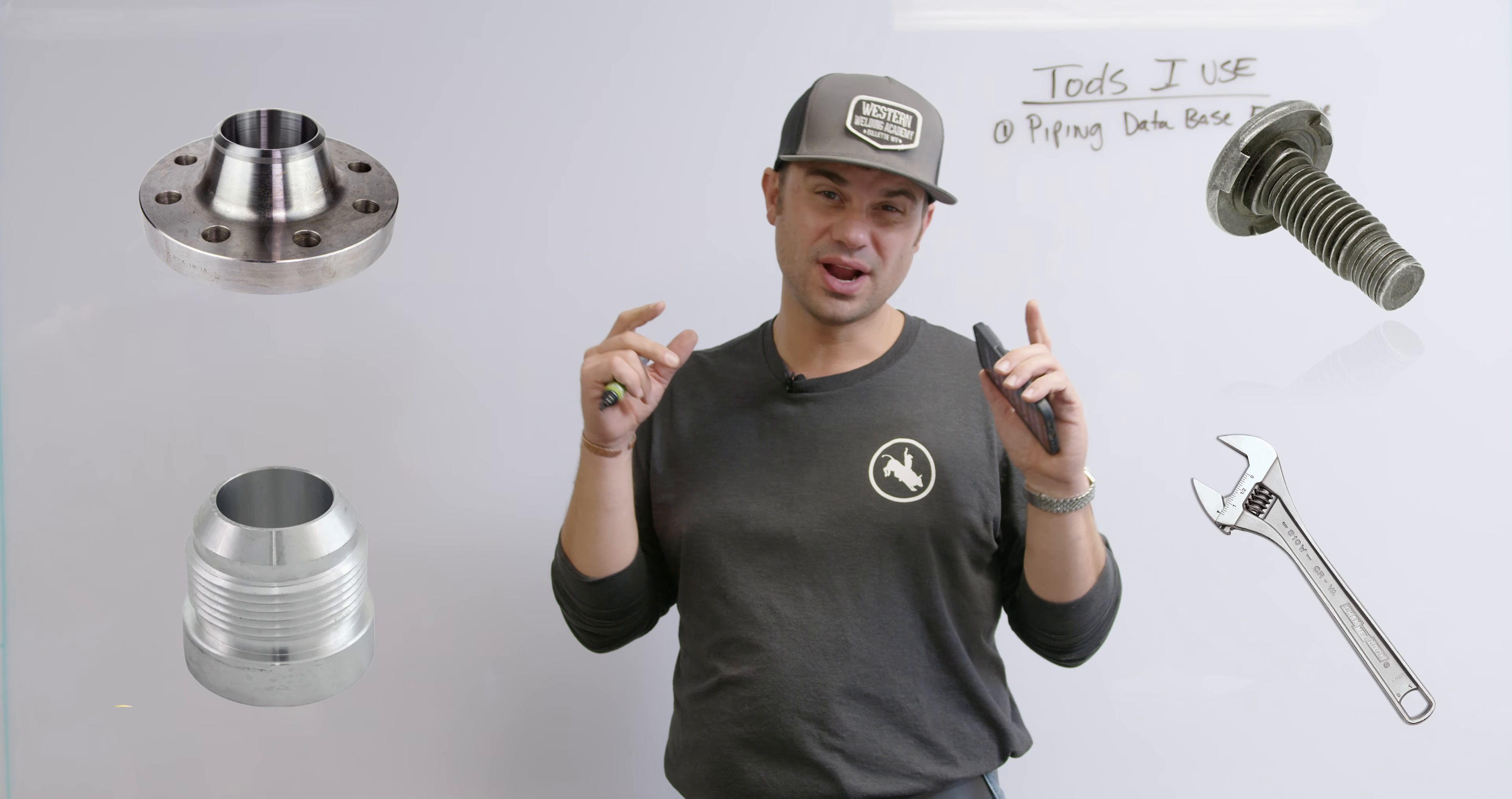Piping Database Extreme is exactly what it sounds like. It's got the takeoffs for every flange, every fitting, bolt lengths. It's even got wrench sizes, torque specs. This is an incredible tool when I'm planning the work or figuring out how I'm going to build something for the engineers.